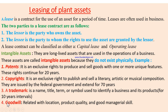The third example of intangible assets is a trademark — a name, title, term, or symbol used to identify a business and its products, renewable in 10-year intervals. The fourth example is goodwill, which relates to location, product quality, and good management or managerial skills. These are all known as intangible assets.